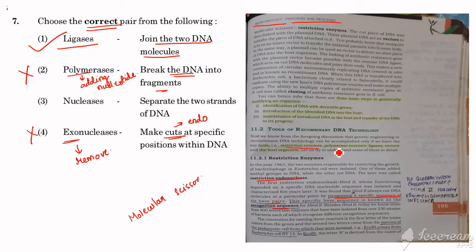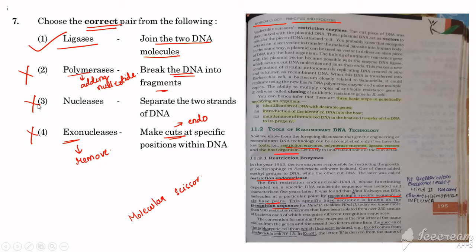Polymerase is given as 'breaks DNA into fragments' — no, polymerase does not break DNA into fragments. That would be helicase for unwinding. Polymerase is for adding nucleotides. That's why that statement is wrong. Nucleases 'separates the two DNA strands' — no, they cut or remove but do not separate strands; unwinding is not what they do. Therefore the correct option is ligase, which joins the two DNA molecules.